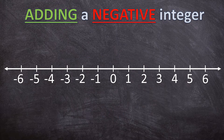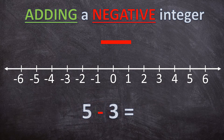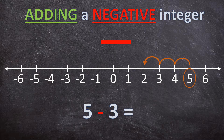Now let's look at the next rule. When we add a negative integer, we are simply going to subtract the integer. For example, we have 5 plus negative 3. When we add a negative integer, we simply subtract the integer — so 5 minus 3 is 2.